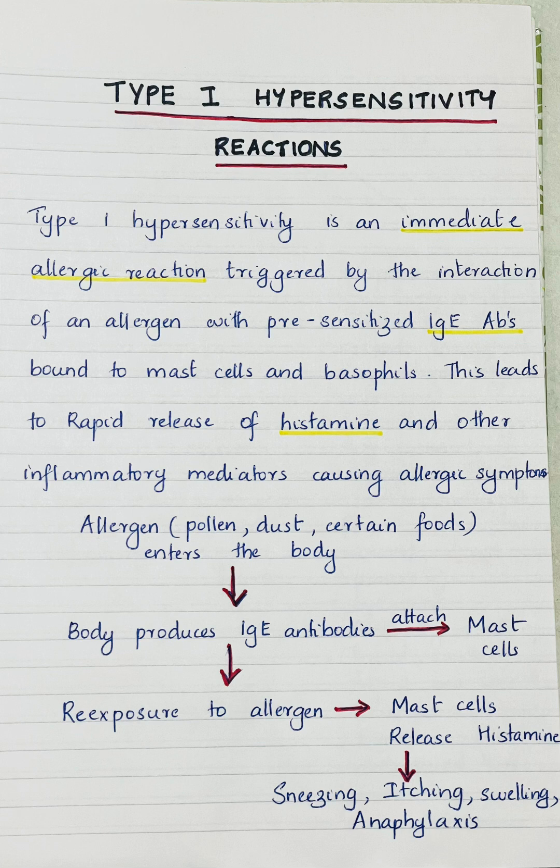So how does this reaction occur? When an allergen such as pollen, dust, or certain types of food enters our body, our body produces IgE antibodies which attach to mast cells. When the body is re-exposed to the same allergen again, the mast cells release chemicals like histamine. This causes symptoms such as sneezing, itching, swelling, or severe reactions like anaphylaxis — difficulty in breathing and shock. This is what is called a type 1 hypersensitivity reaction.